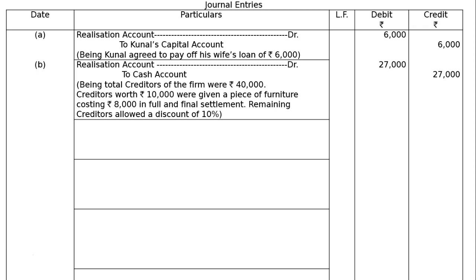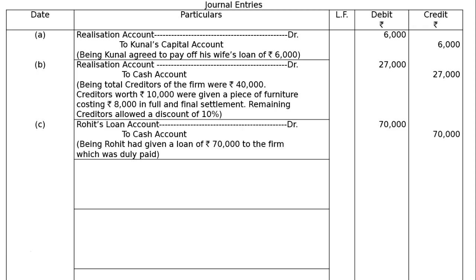Part C: Rohit had given a loan of Rs.70,000 to the firm which was duly paid. This is a direct payment — Rohit is a partner. Entry: Rohit's Loan Account debited to Cash or Bank Account Rs.70,000. Being Rohit had given a loan of Rs.70,000 to the firm which was duly paid. The loan is directly paid through the cash account.